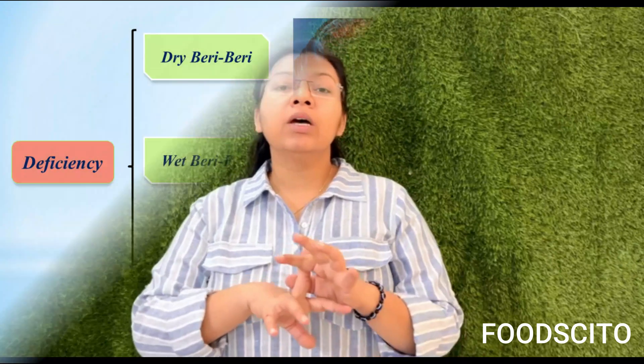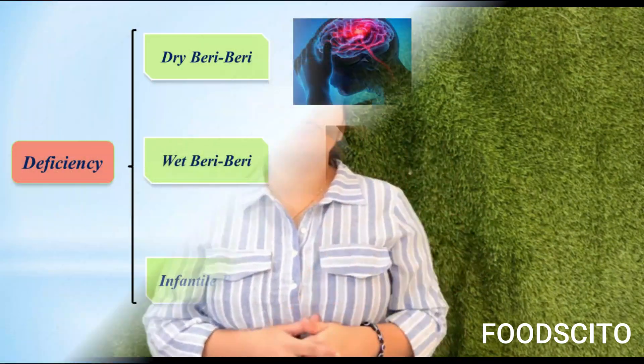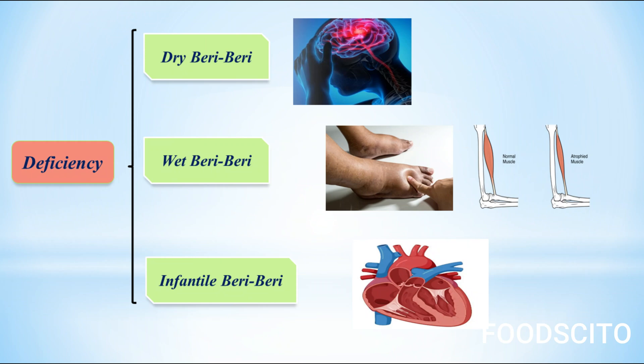Now let's discuss its deficiency. Deficiency of Vitamin B1 leads to beriberi, which can be dry beriberi, wet beriberi, and infantile beriberi. The deficiency mostly affects the neurological and cardiovascular systems. Symptoms include neurological manifestations, muscle atrophy, edema, and mental confusion.